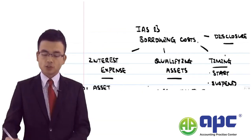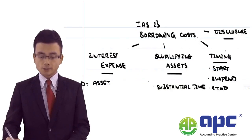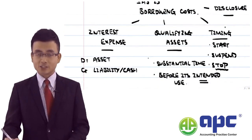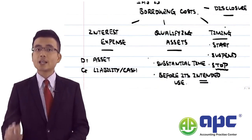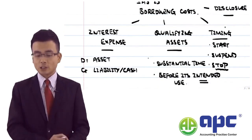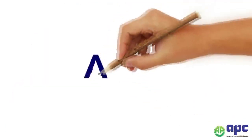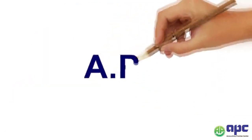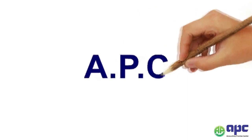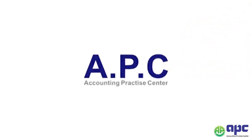We've now finished covering interest expense — the first element of IAS 23 — and will next look at the qualifying asset.